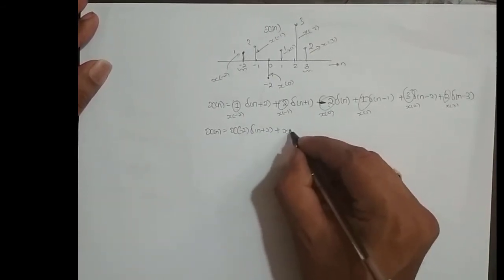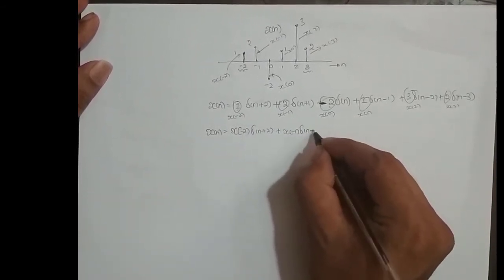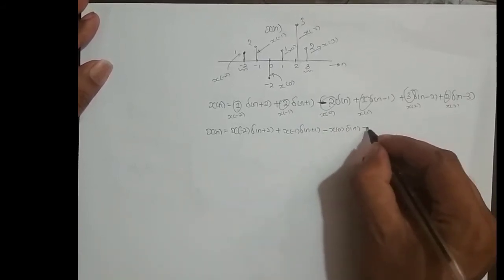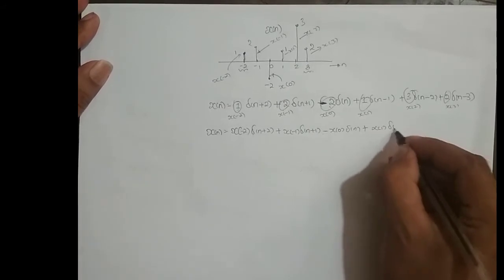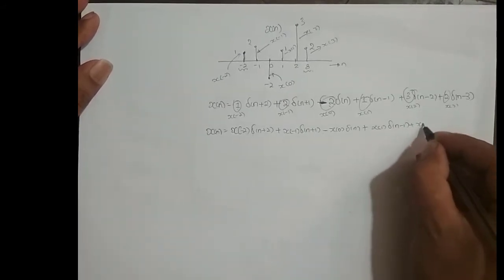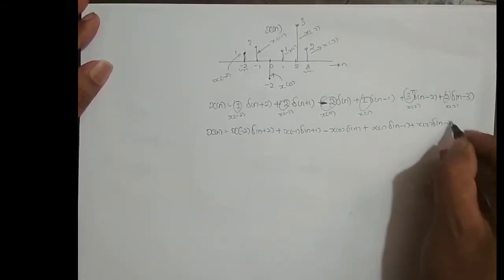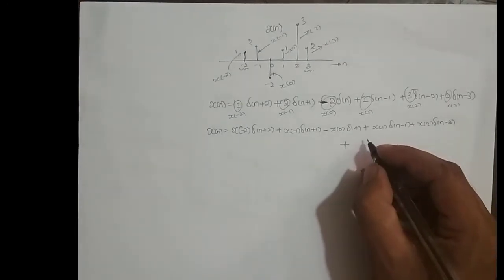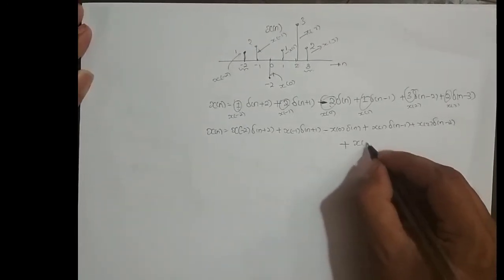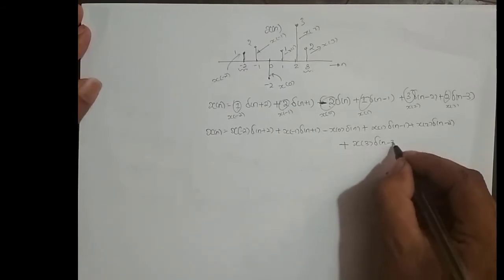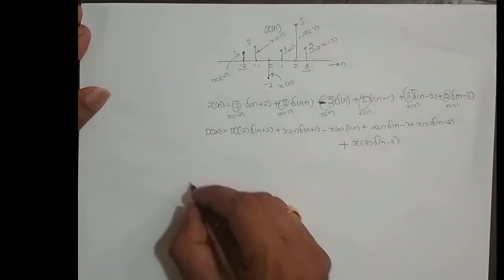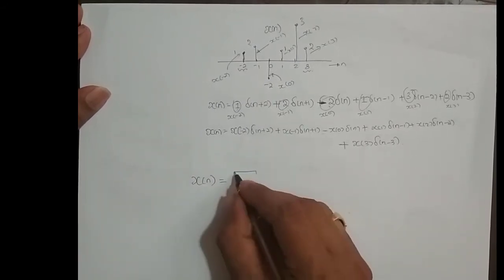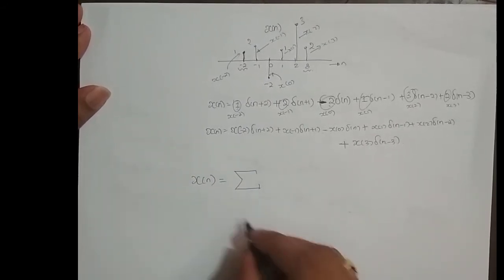So the full expression becomes: X of minus 2 times delta of n plus 2, plus X of minus 1 times delta of n plus 1, plus X of 0 times delta of n, plus X of 1 times delta of n minus 1, plus X of 2 times delta of n minus 2, plus X of 3 times delta of n minus 3. We can represent this in a compact summation form.